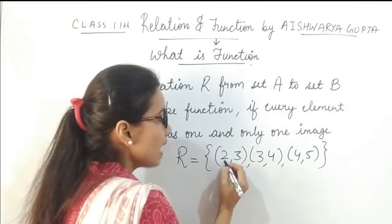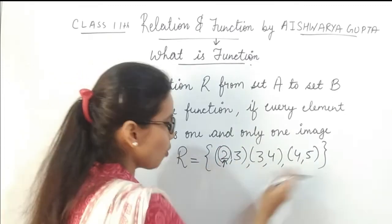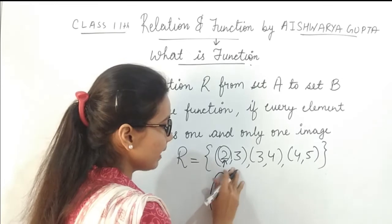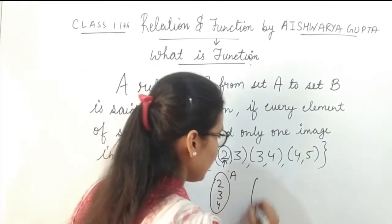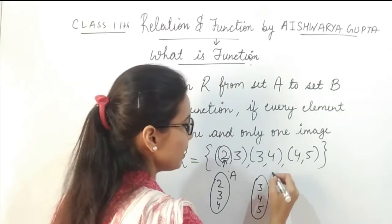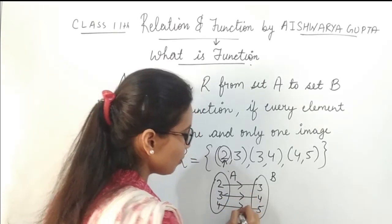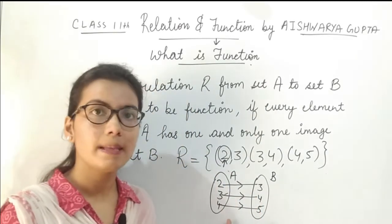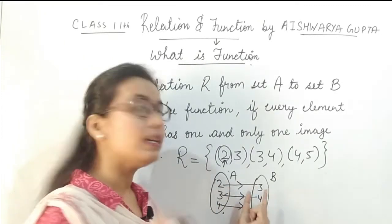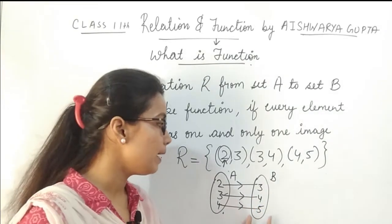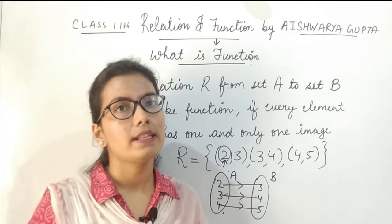Because every element of set A — if set A has elements 2, 3, 4 and set B has elements 3, 4, 5 — then as you can see in the arrow diagram, every element of set A has one and only one image in set B. So this relation is called a function.